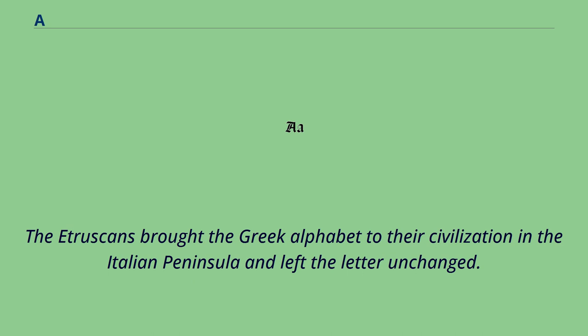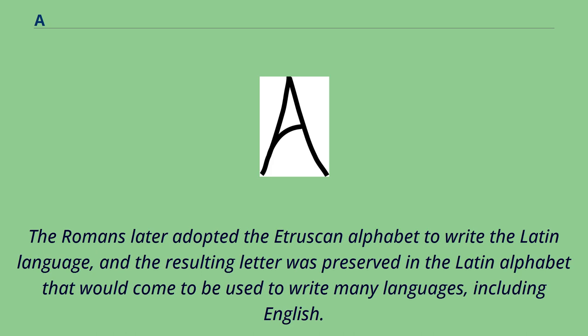The Etruscans brought the Greek alphabet to their civilization in the Italian peninsula and left the letter unchanged. The Romans later adopted the Etruscan alphabet to write the Latin language, and the resulting letter was preserved in the Latin alphabet that would come to be used to write many languages, including English.